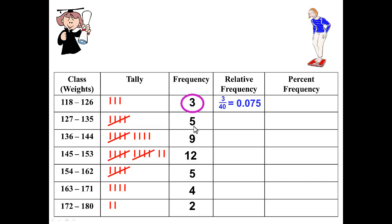We'll proceed to do the second class the same way. We'll take the frequency 5, divide by 40, that will give us 5 over 40, and gives us 0.125. And proceed to figure it out for the third class, which would be 9 divided by 40, which is going to give us 0.225.